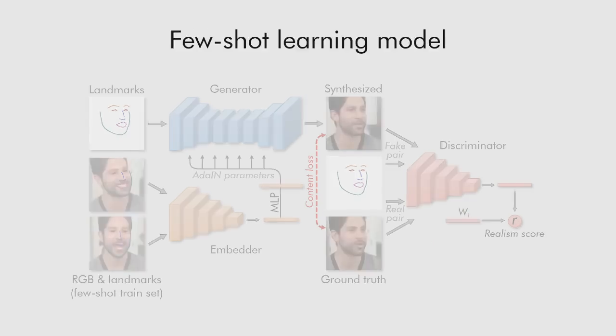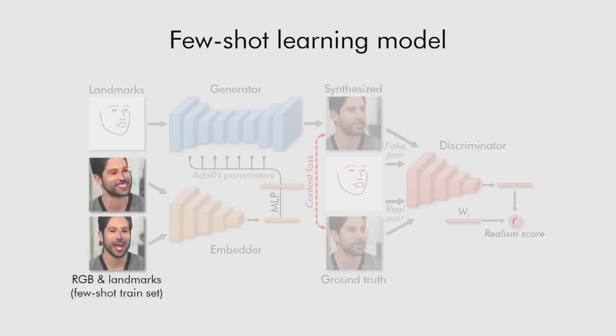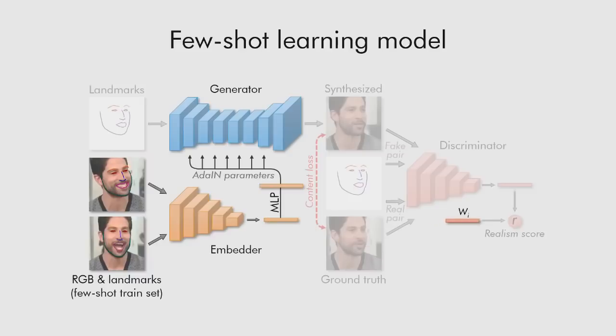After meta-learning, we are able to fine-tune the generator and the discriminator for a new person. The generator and discriminator networks have tens of millions of parameters; still, such fine-tuning is possible on just a few images, thanks to the good initialization provided by the meta-learning stage. Before fine-tuning for a new person, we initialize the adaptive parameters of the generator and the video embedding inside the discriminator using the output of the embedder network.